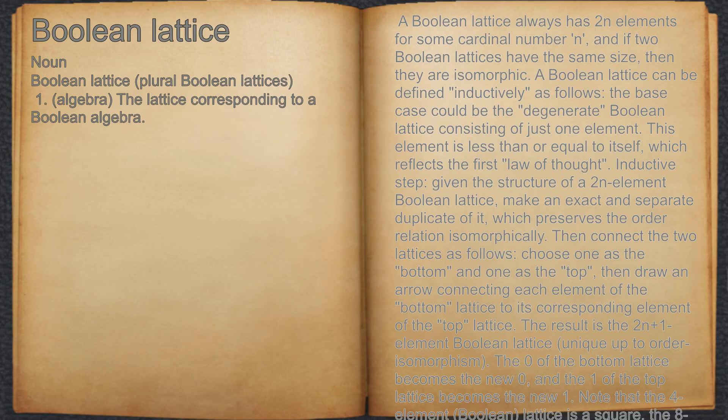Note that the 4-element Boolean lattice is a square, the 8-element lattice is a cube, the 16-element lattice is a tesseract, and higher order lattices are higher dimensional hypercubes in general.